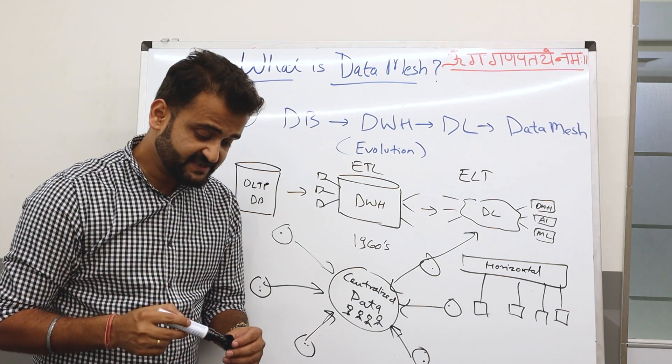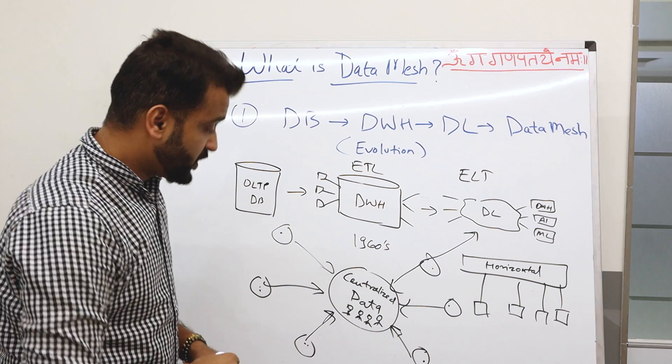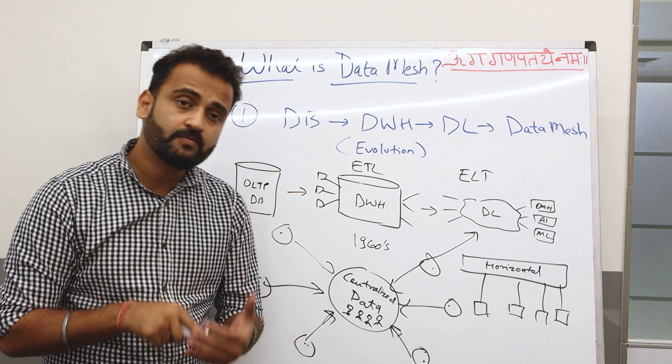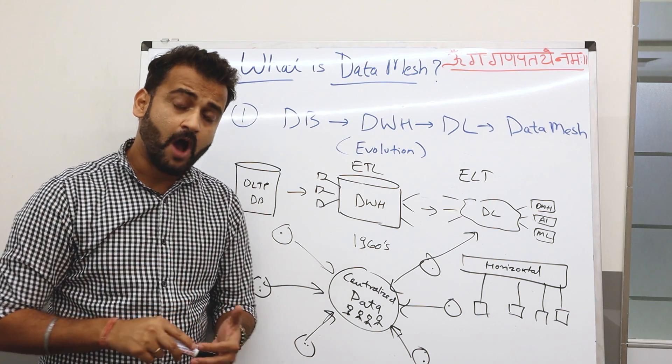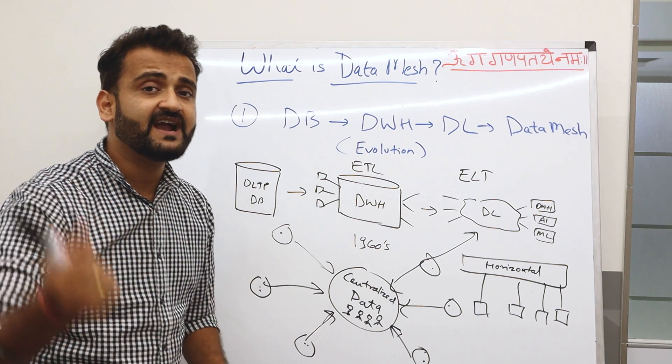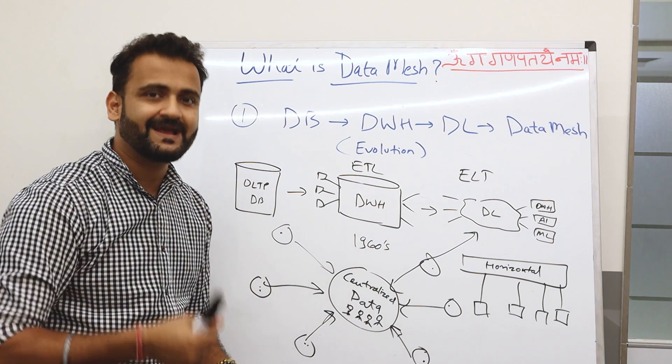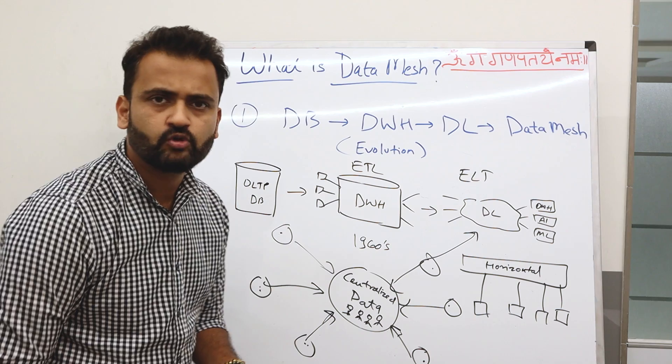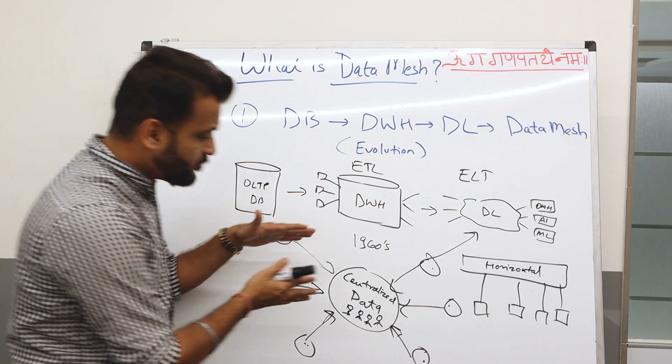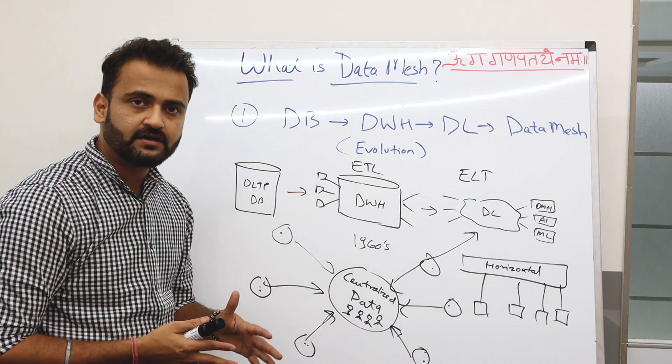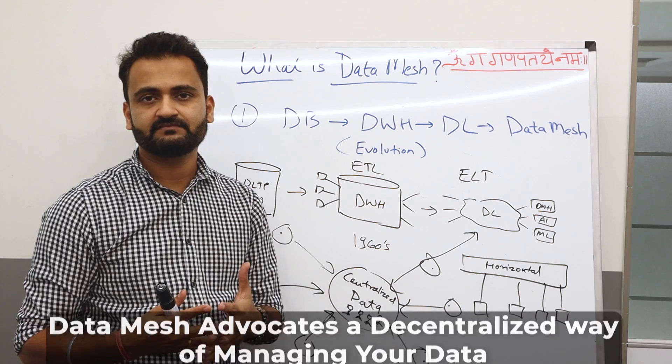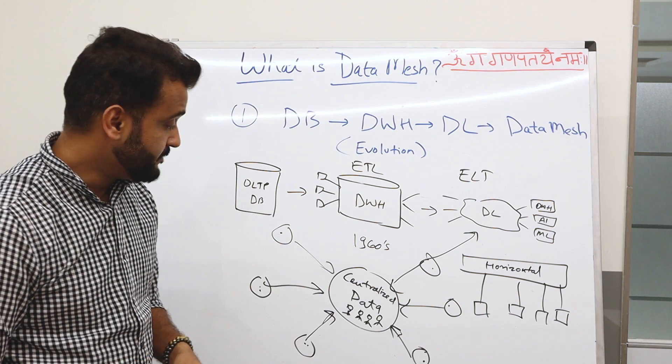But Data Mesh questions this because Data Mesh feels that these domains know their problems. These domains know what kind of data they need and also how quickly they need it. And generally this centralized data team will not have that level of domain excellence to understand quickly and bring those insights quickly to these domains. So instead of this centralized structure, Data Mesh advocates a decentralized way of managing your data, which is the core philosophy of Data Mesh.